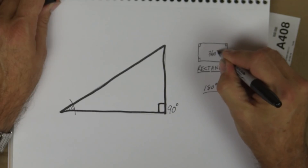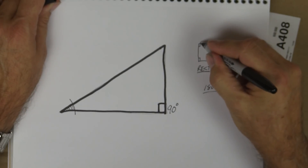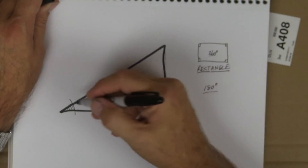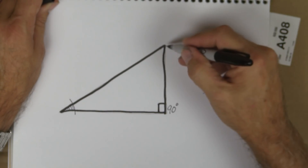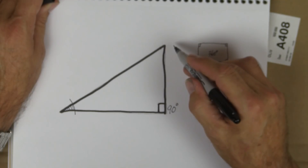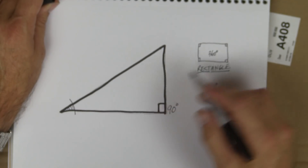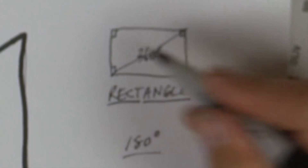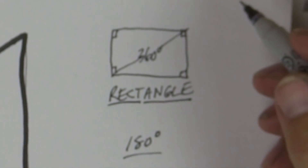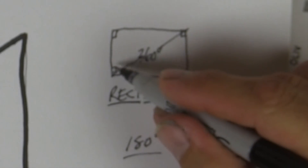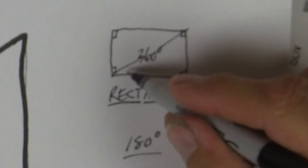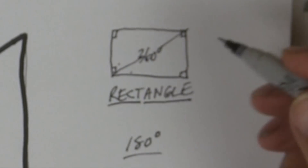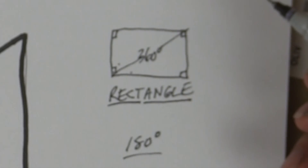360 degrees in a rectangle because we've got 90, 90, 90, 90 — four times 90 is 360. It just happens to be that if we were to make this a rectangle, the triangle would be half of it. So half of the triangle would be 180 degrees, and the other half would be the other 180 degrees. 90 cut in half, then 90 cut — that plus that equals 90, that plus that equals 90, and 90 plus 90 plus 90 plus 90 is 360.